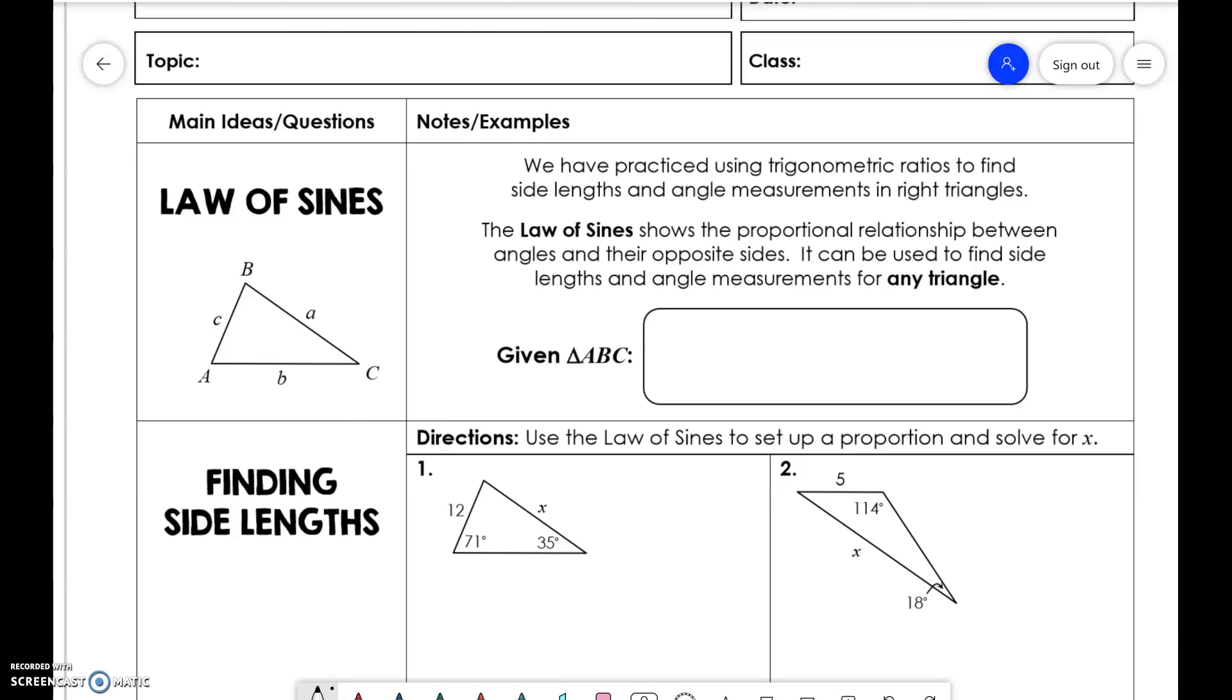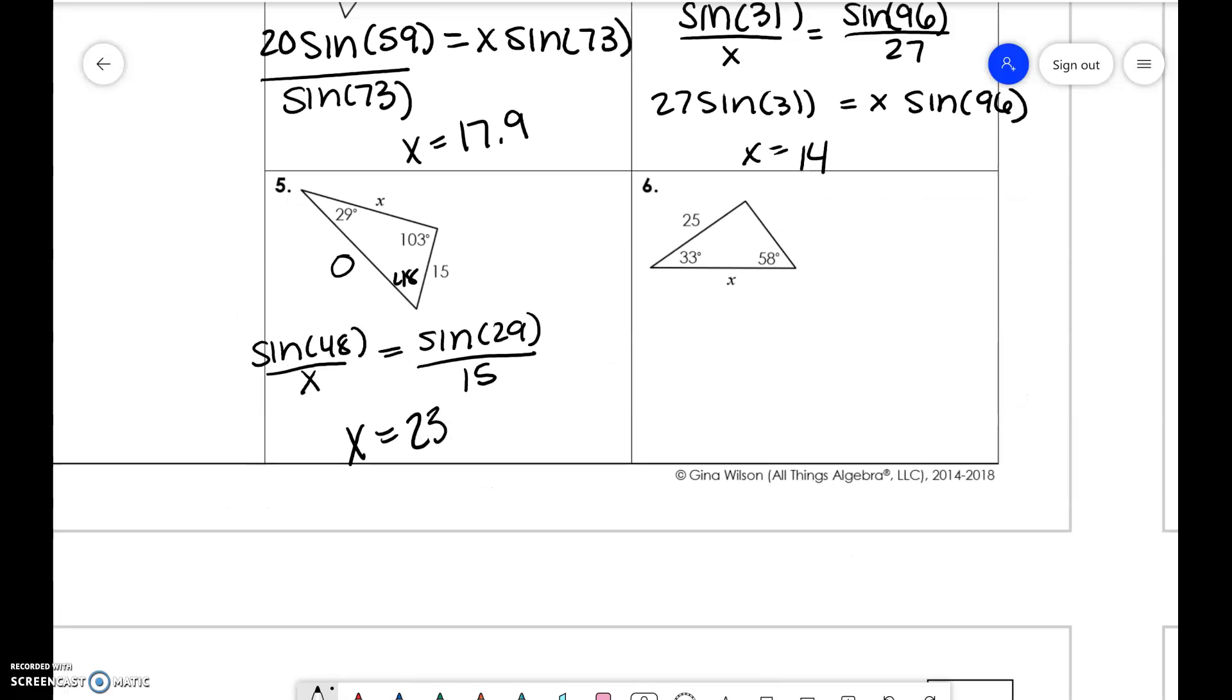So for this one we need this angle, so we would do 180 minus 33 minus 58 to get 89. So sine of 89 over x is equal to sine of 58 over 25.